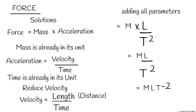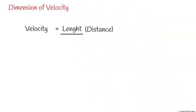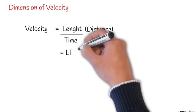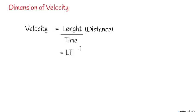For velocity: the formula is length over time, which is L/T. Since time is at the bottom, taking T upwards — T has a power of 1, so it becomes T⁻¹. Therefore the dimension of velocity is LT⁻¹. That's straightforward.